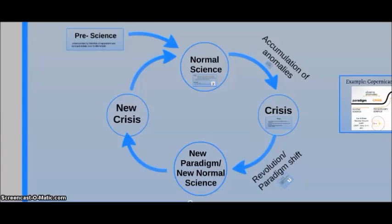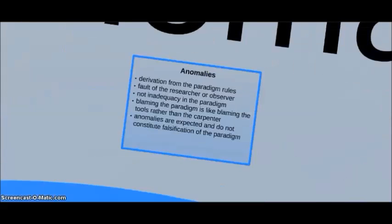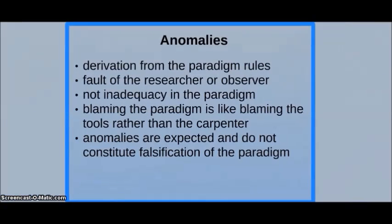Kuhn held that in the process of normal science, anomalies would occur. Anomalies are deviations from the paradigm rules. Kuhn believed that these failures were the fault of the researcher or observer and not inadequacies in the paradigm. This is akin to saying that blaming the paradigm is like blaming the tools rather than the carpenter. Kuhn held that anomalies are expected and do not constitute a falsification of the paradigm, unlike Popper.